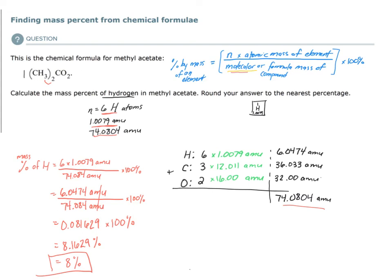There are many different ways to approach this problem — it all begins with how you interpret the chemical formula. We used the molecular interpretation: one molecule of methyl acetate has this many atoms. You could also use the molar interpretation, which uses moles of each element instead. The math is slightly different but you end up with the same answer. Both explanations are available to you.